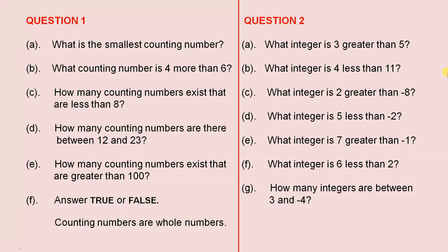So the first question: what is the smallest counting number? What counting number is four more than six? How many counting numbers exist that are less than eight? How many counting numbers are there between twelve and twenty-three? How many counting numbers exist that are greater than one hundred? Answer true or false: counting numbers are whole numbers. So they are all the different types of questions for question one.